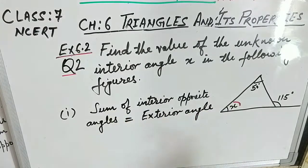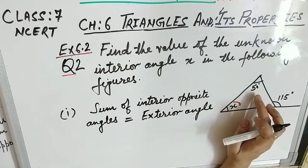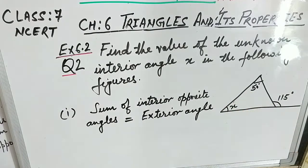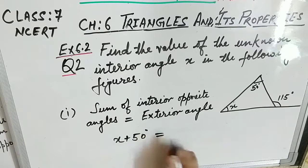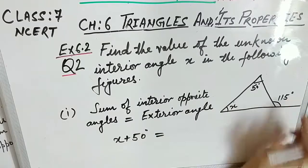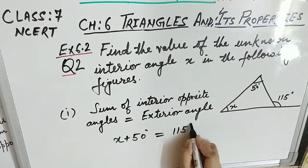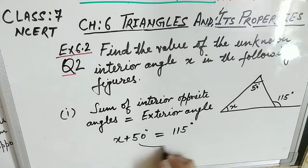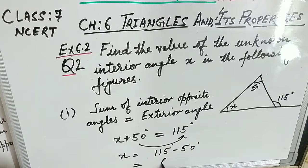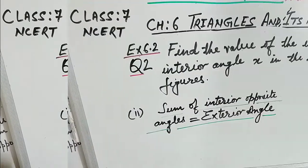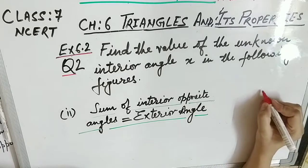Figure 1: the two interior opposite angles are x and 50°, and the exterior angle is 115°. So x + 50° = 115°. Transposing, x = 115° − 50° = 65°.